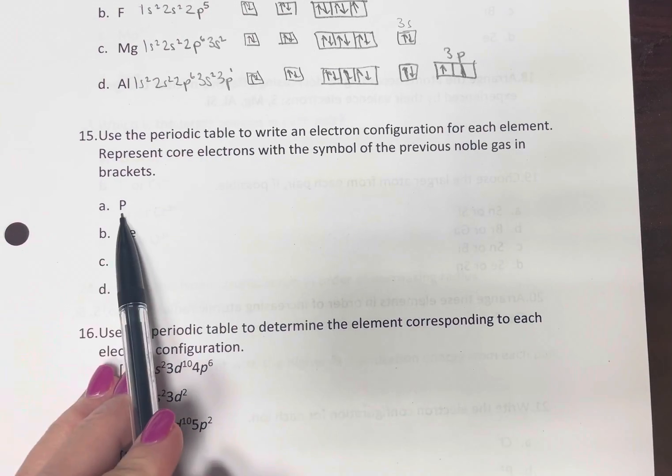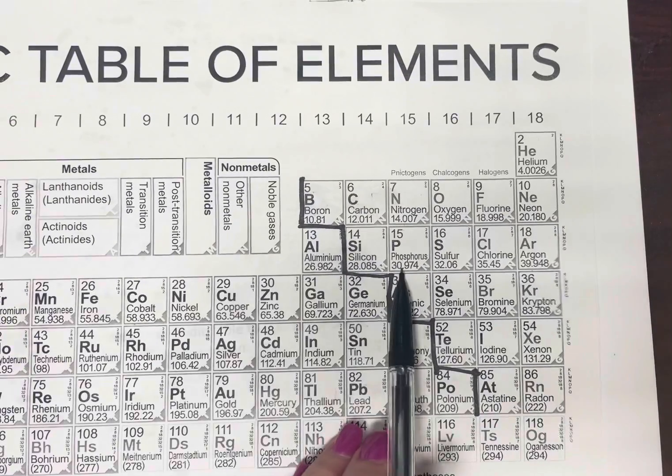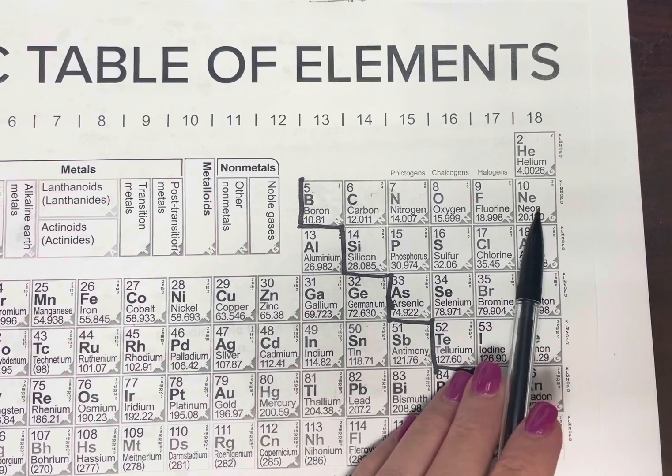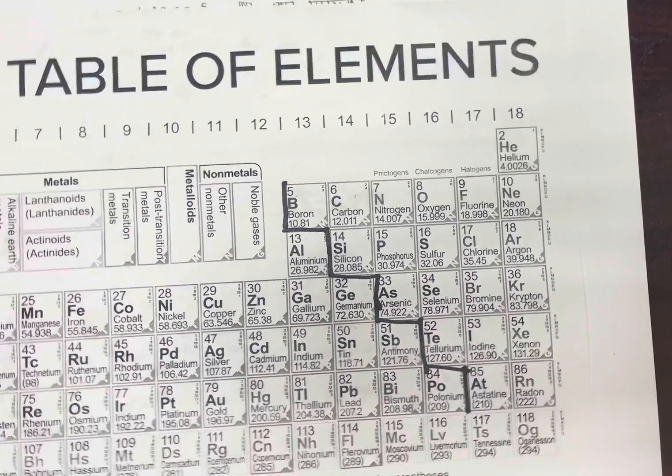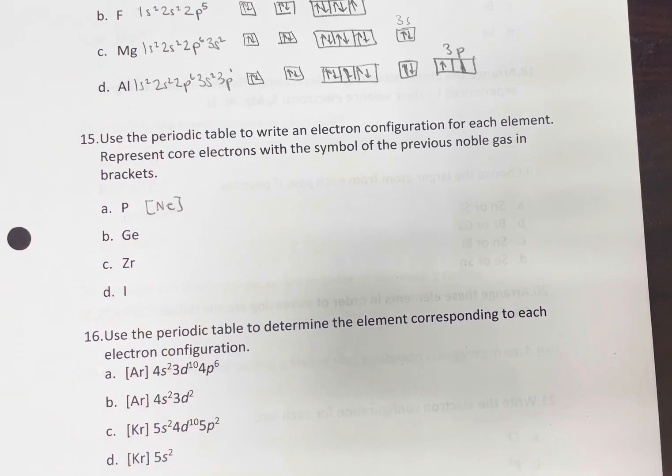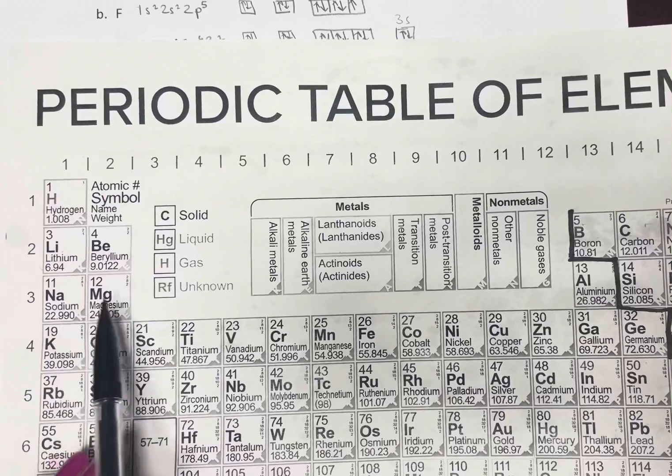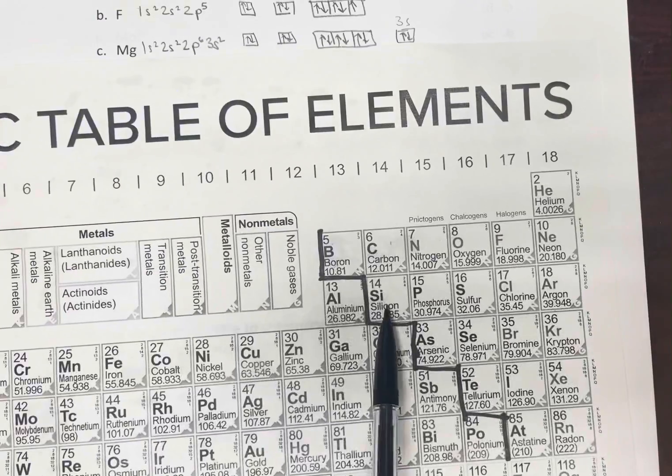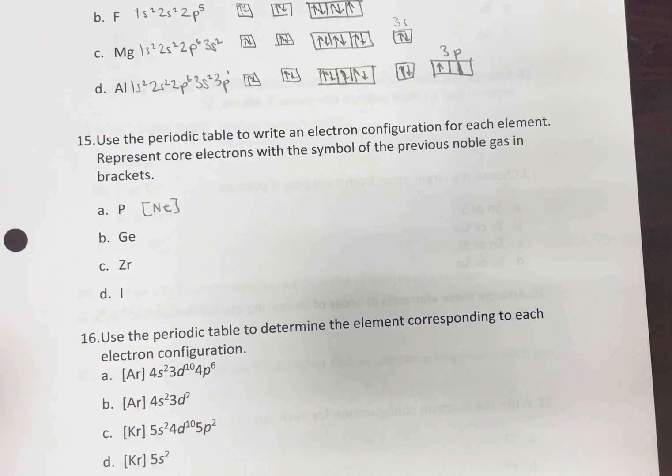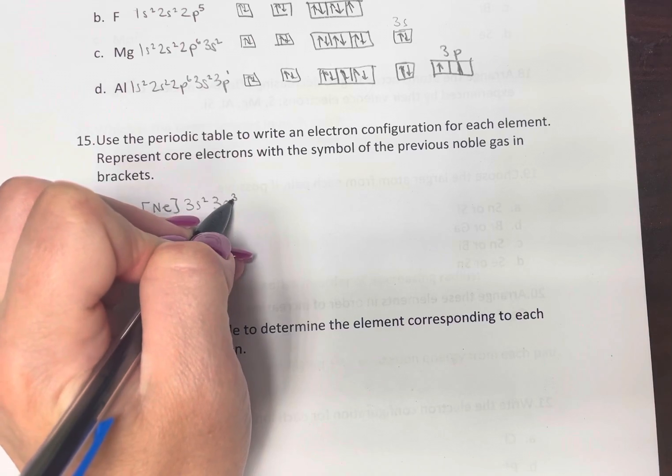So let's find phosphorus. We need to find phosphorus. There it is. So the previous noble gas is neon, so that fills up our second row. We're going to put neon in brackets. So we only need to write the third row. So that's going to be 3s2, 3p, 1, 2, 3. 3s2, 3p3.